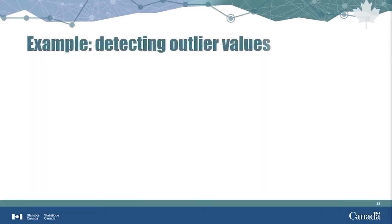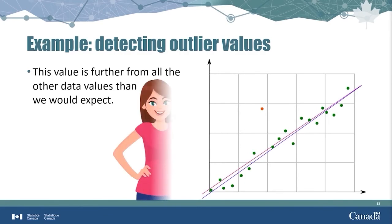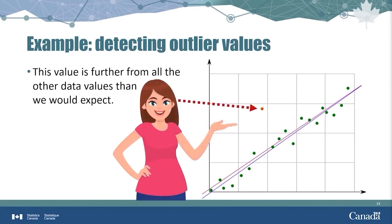In this made-up example, the data points represented by the green and red dots have been plotted on a horizontal and vertical axis. Two different methods have been used to estimate the central tendency of the data values, represented by the red and blue lines. Most of the data values fall on or near both of the fitted lines. However, the red point is way off the lines — it's an outlier value. Further investigation is needed to determine what makes this data point so different and what should be done with it. Some outlier values are correct, even though they are unusual.